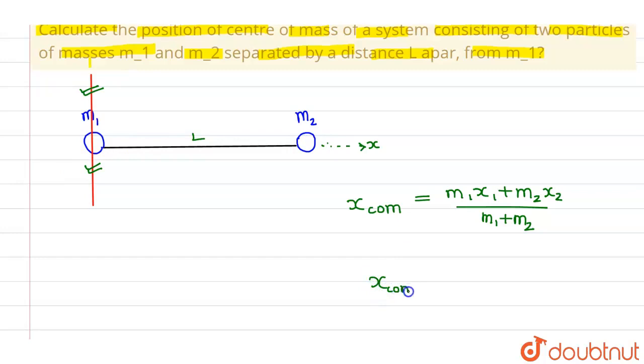x center of mass becomes m1 into 0 plus m2 into L divided by total mass which is m1 plus m2.